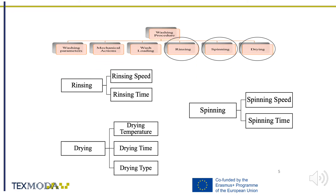Concerning rinsing, drying and spinning phases of the washing process, main parameters are given in this slide. For the rinsing, RPM and rinsing time are important parameters. For the spinning, the same parameters are relevant even if the speed is much more important and time may be very different depending on the washing cycle. Finally, for the drying, the temperature, the angular speed, and indirectly accelerations and durations are important and are supposed to generate more or less damage on e-textile components.